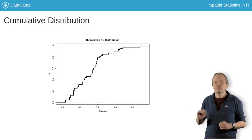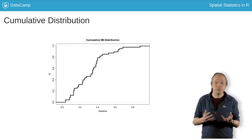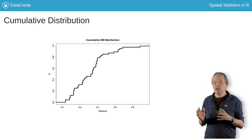The corresponding cumulative distribution function, the probability of finding a nearest neighbor within a distance d, is named G.